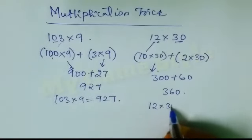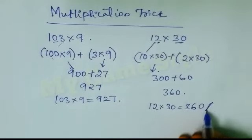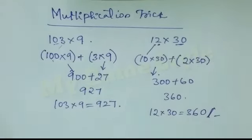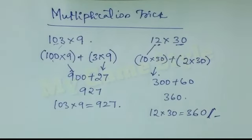So 12 into 30 is equals to 360. So friends, this is how you need to multiply. Thank you for watching this video.